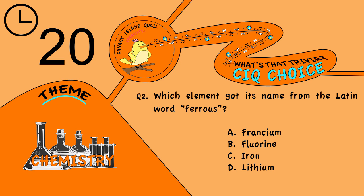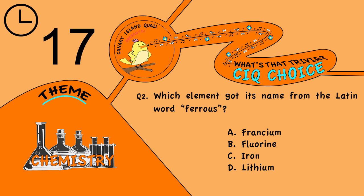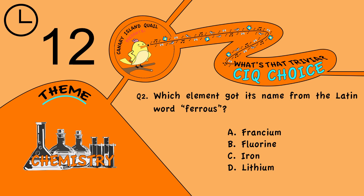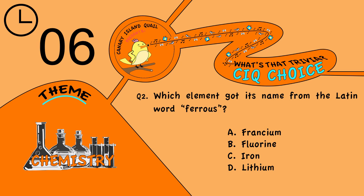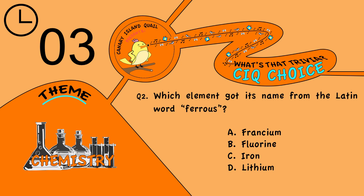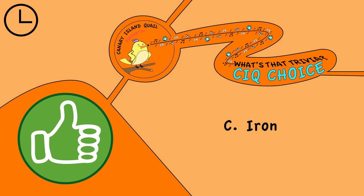Question 2. Which element got its name from the Latin word ferris? Is it A, francium; B, fluorine; C, iron; or D, lithium? The answer is C, iron.